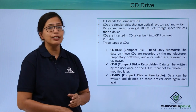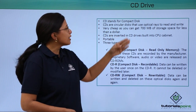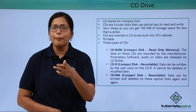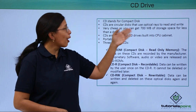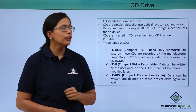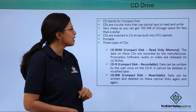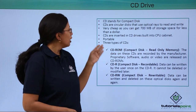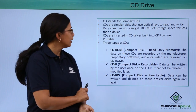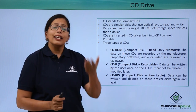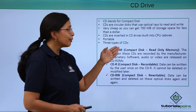Now let's look at the CD drive. CD stands for compact disk. CDs are circular disks that use optical rays — unlike hard disks, which used magnetic rays. Here, optical rays are used to read and write. They are very cheap; you can get 700 MB of storage space for less than a dollar. CDs are inserted in the CD drive built into the CPU cabinet, and they can be taken out and used in other systems, so they are portable.